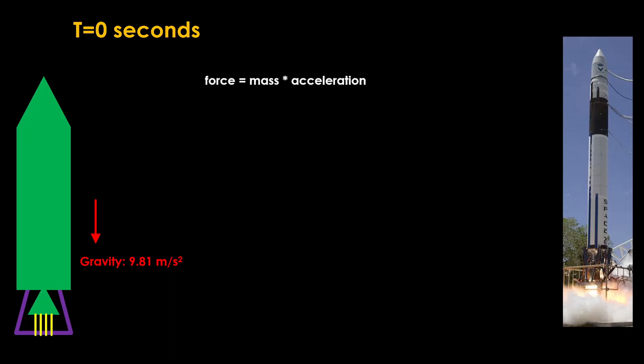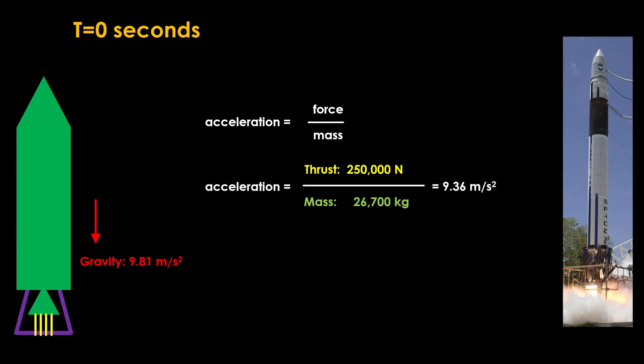Remembering Newton's first law of motion, force equals mass times acceleration. In this case, we know the force of the engine and the mass of the rocket, so we want to rewrite that equation as acceleration equals force over mass. Let's say that our engine produces 250 kilonewtons or 250,000 newtons of force and the rocket weighs 26,700 kilograms. Plug that into the formula and we find that the engine will be producing 9.36 meters per second squared of acceleration.